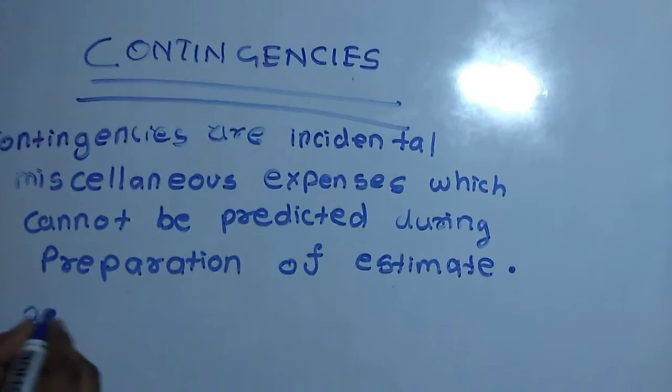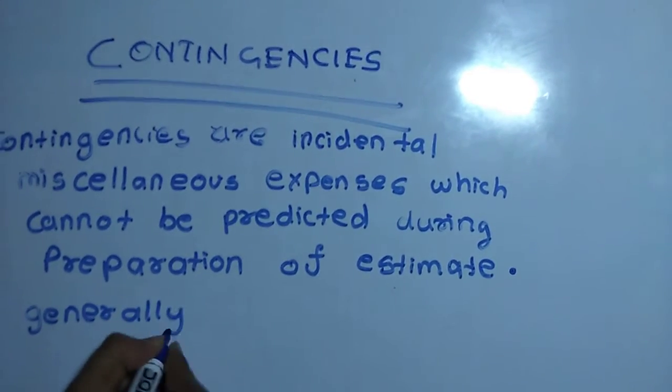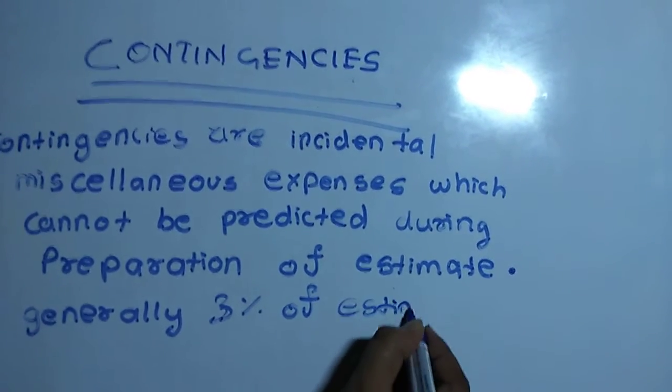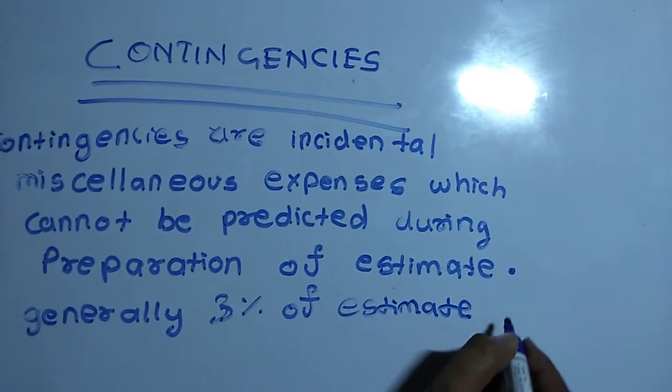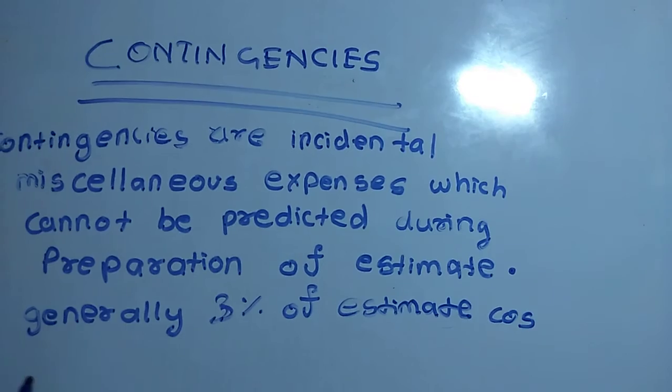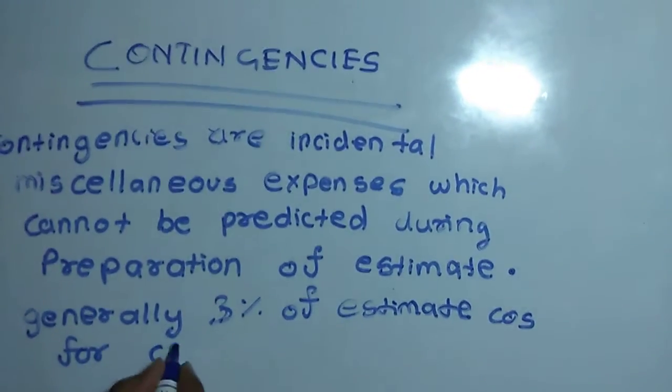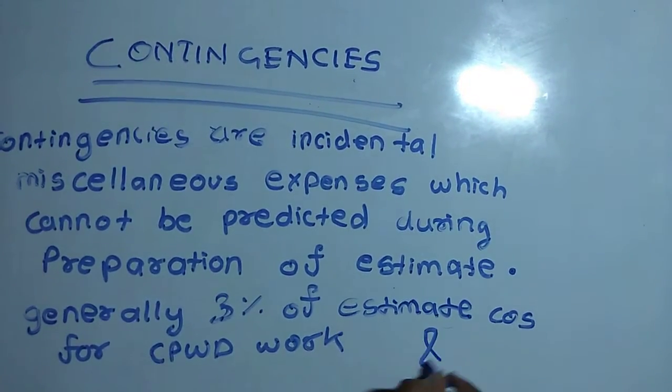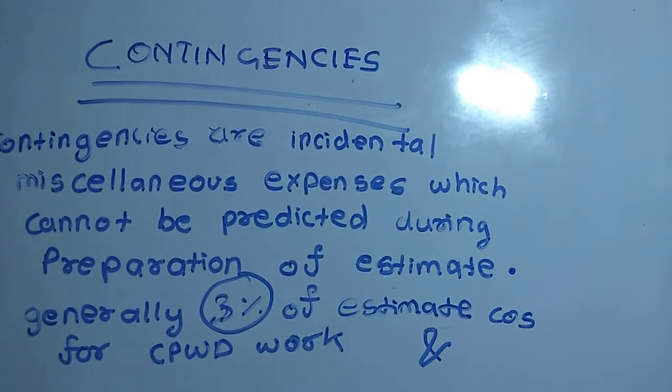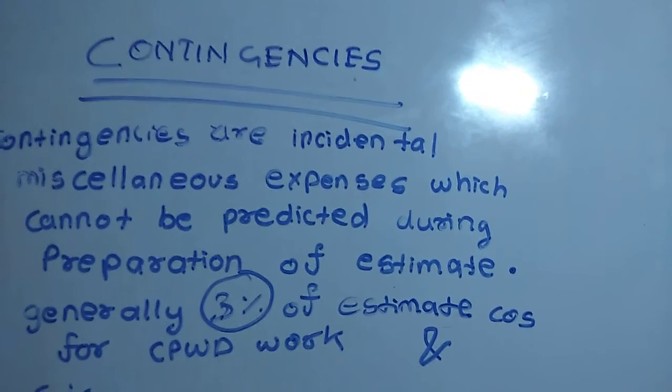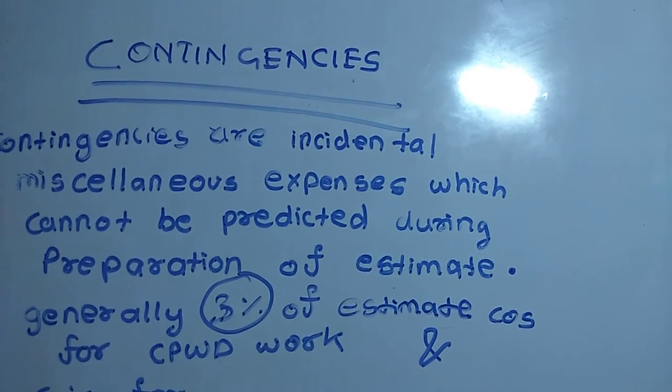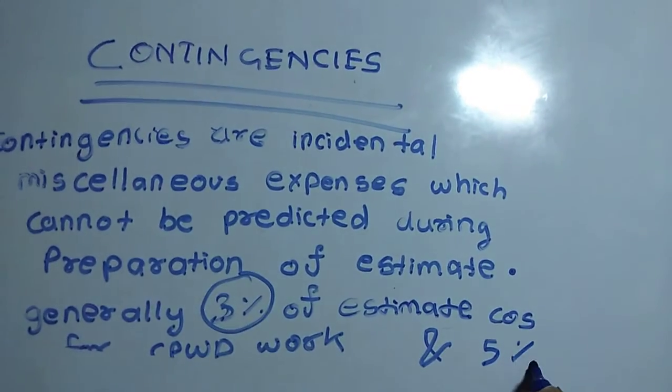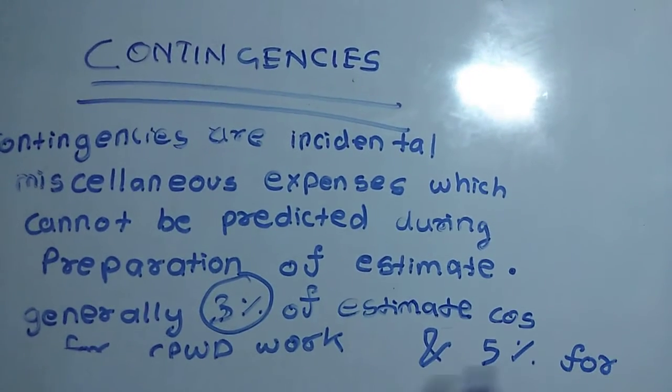Generally 3% of estimate cost for CPWD works, and these two things we have to remember, and 5% for State PWD.